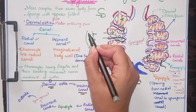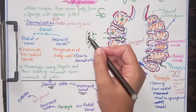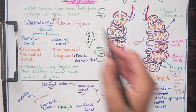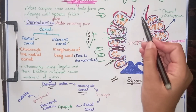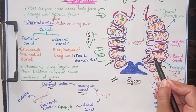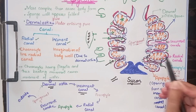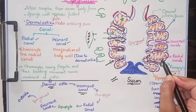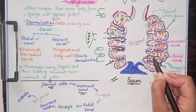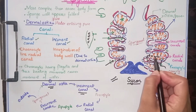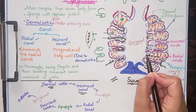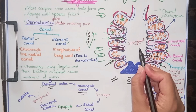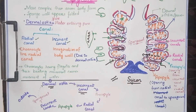There is another modification in the radial canal. In Ascon body form, choanocytes line up in the spongocoel, while in Sycon body form, choanocytes are not lined up in the spongocoel but are instead lined up in the radial canal. When water enters the radial canal, the flagella start to beat and water starts to move further.